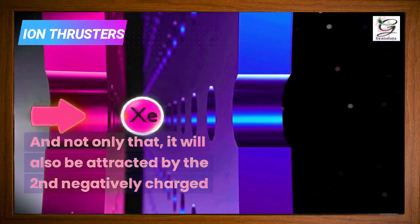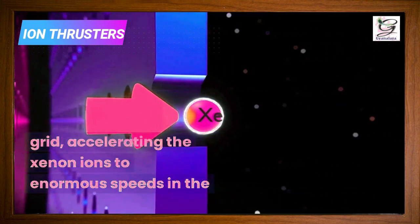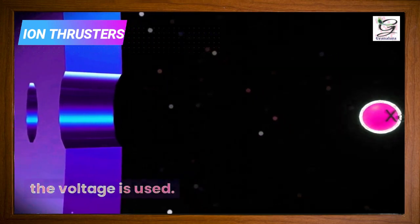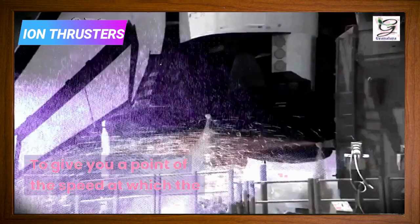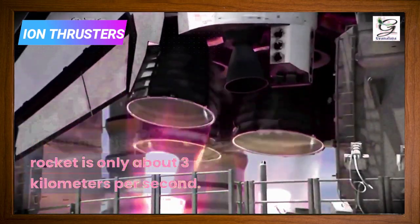And not only that, it will also be attracted by the second negatively charged grid, accelerating the xenon ions to enormous speeds, in the order of tens or even hundreds of kilometers per second, depending on the voltages used. To give you a point of reference, the speed at which the gases are ejected in a rocket is only about 3 kilometers per second.